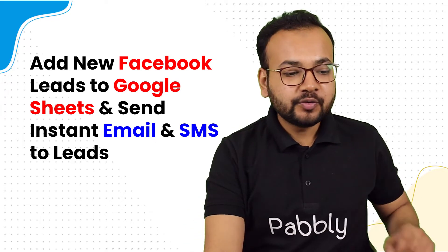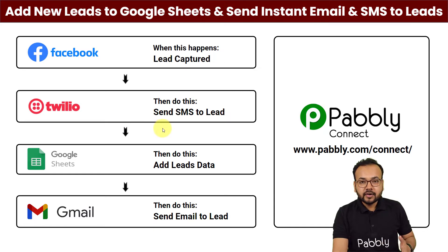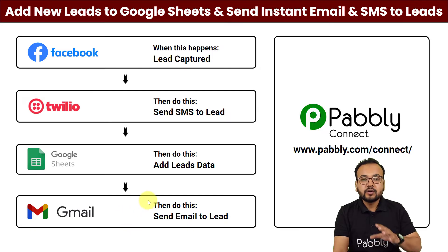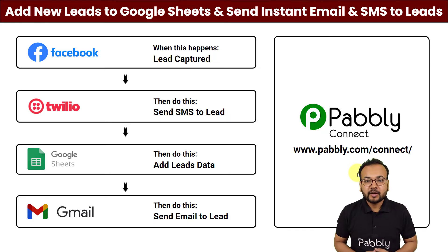Let me show you how this is going to work. As and when you capture a lead with the help of a Facebook lead ad form, an SMS will be delivered to that lead with offers or information about your product or service. The same lead will be added into Google Sheets automatically, and an email will be delivered to that lead stating any latest service or offering. All of this happens automatically with Pabbly Connect, an integration and automation tool — and the best part is anyone can set this up without any coding skills. Let's set it up together right now.